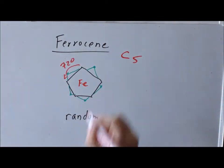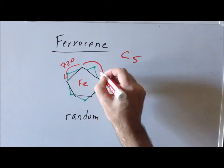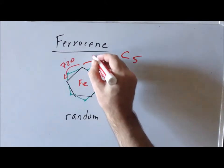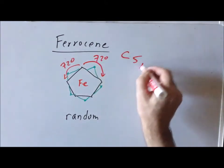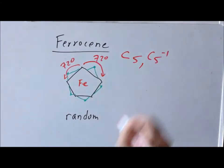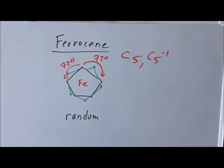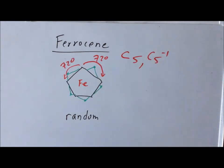Going clockwise 72 degrees gives us C5 to the minus one. Those are going to be the only rotations coaxial with that axis, because 5 is a prime number.